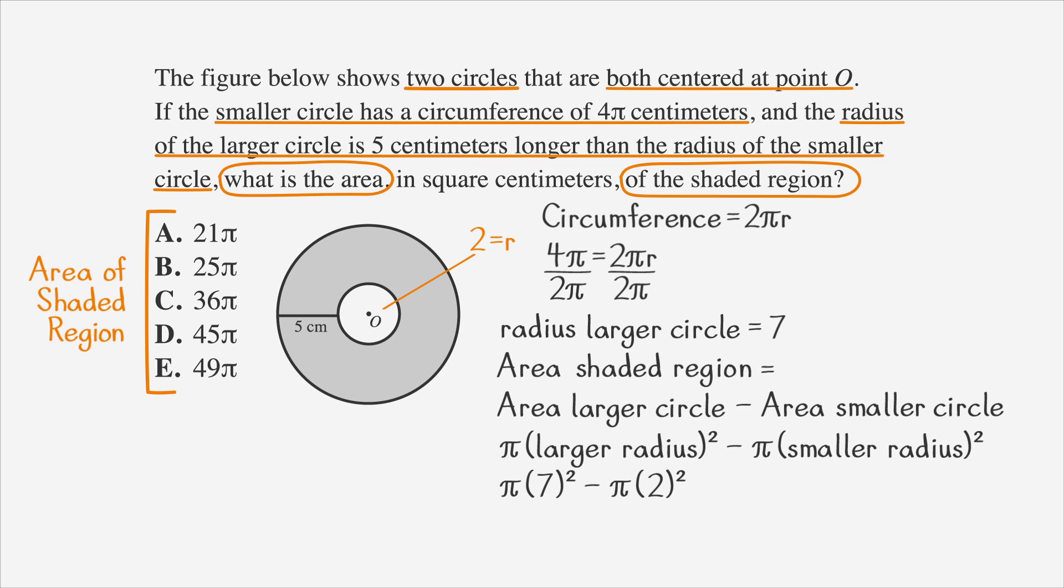The larger radius is 7, and the smaller radius is 2, which gives us 49 pi minus 4 pi, which equals 45 pi. Answer choice D.